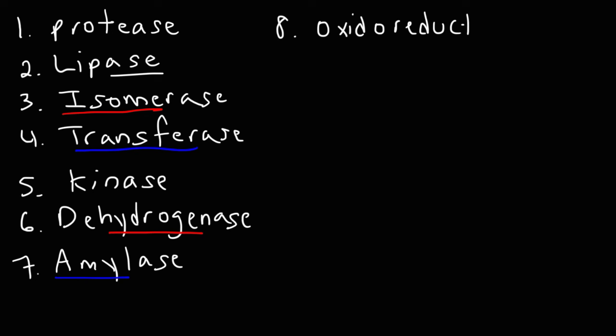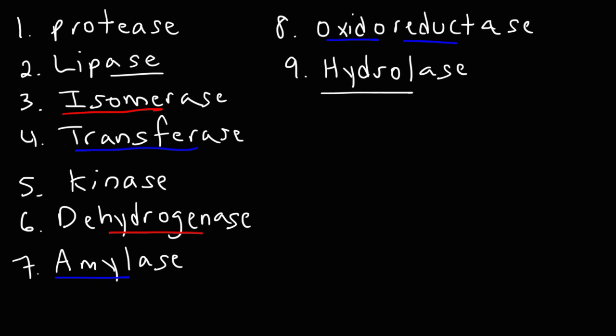Oxidoreductase — think of oxidation and reduction, which are redox reactions involving the transfer of electrons. In oxidation, electrons are lost; in reduction, a substance gains electrons. So oxidoreductase is an enzyme that catalyzes the transfer of electrons from one molecule to another. Finally, hydrolase — think of hydrolysis, which uses water to split a big molecule into two smaller components. Hydrolase is an enzyme that catalyzes hydrolysis reactions. Those are some key enzymes to familiarize yourself with.